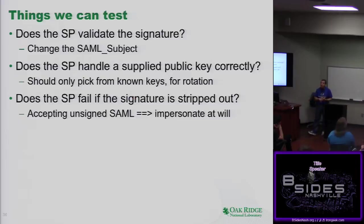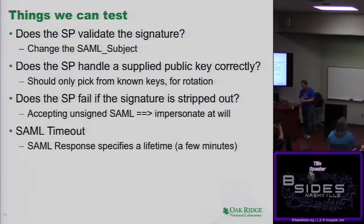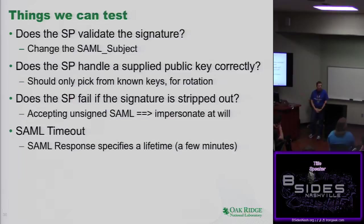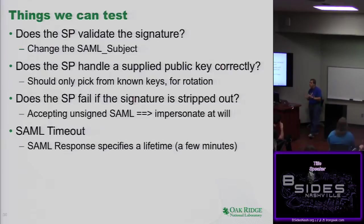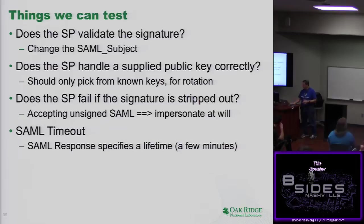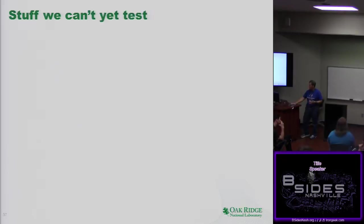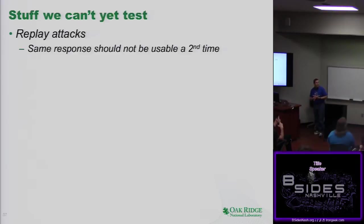Does the service provider fail completely if the signature is stripped out? The SP should never, ever, ever accept unsigned SAML — that was part of the problems Samorowski found. This is the one problem we found, and it was due to a configuration error. SAML should also time out — a SAML token should be valid for a period of minutes, configurable between SP and IDP, with common clock synchronization required. A fairly standard setting is five minutes; we often use three minutes. We have not yet put in the framework to test replay attacks. A SAML token should be valid exactly once — that was also a problem Samorowski noted.